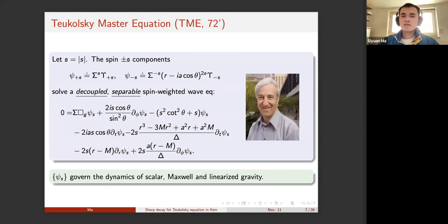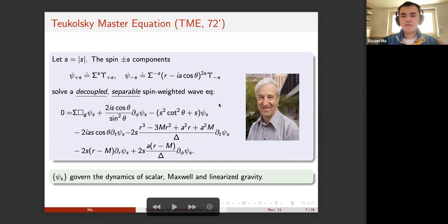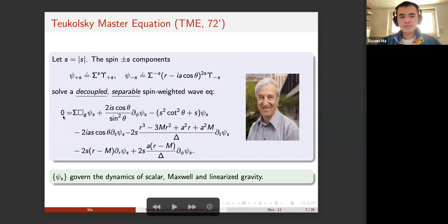The Teukolsky equation, or Teukolsky Master Equation (TME), is obtained by doing some rescaling for the spin-s components with funny scaling of R and theta functions. The quantity psi_s, or psi_{+|s|} and psi_{-|s|}, where |s| is the absolute value of s, satisfies the so-called Teukolsky equation. This is a decoupled equation from the system and it is separable. It's a spin-weighted wave equation because these scalars are sections of a complex line bundle.